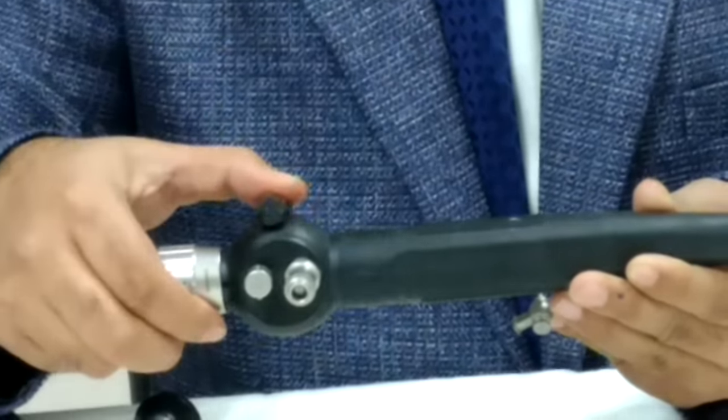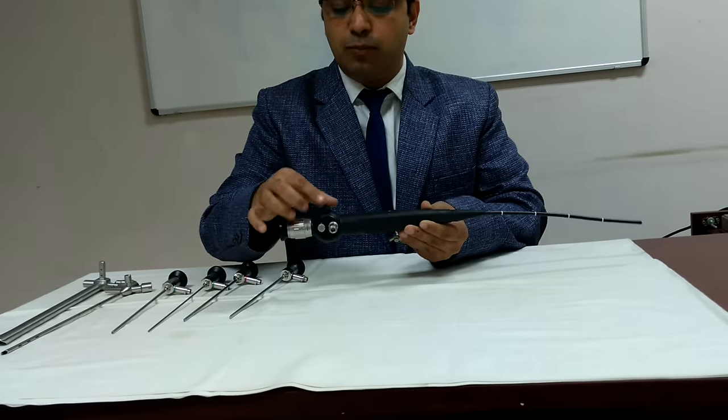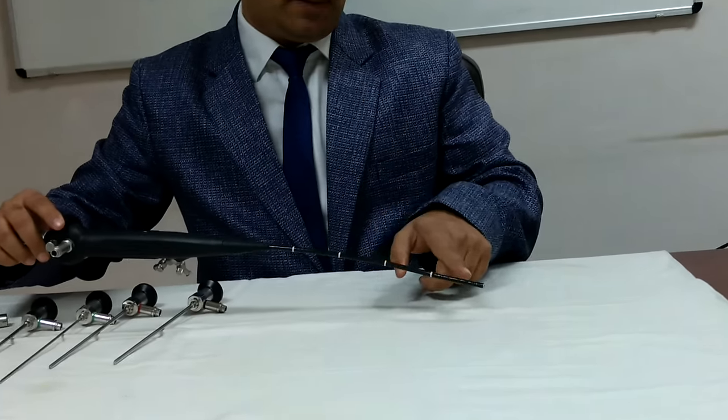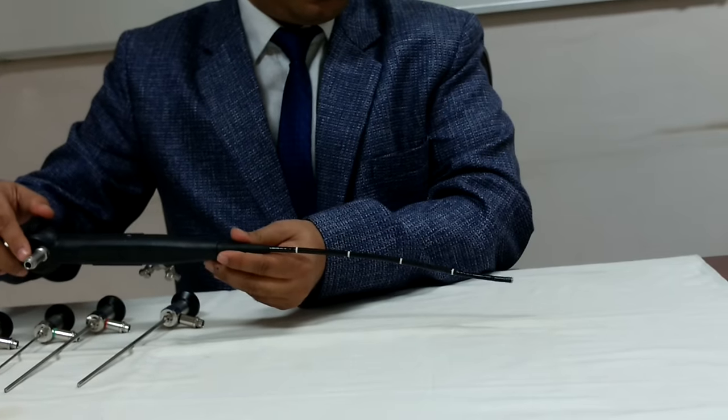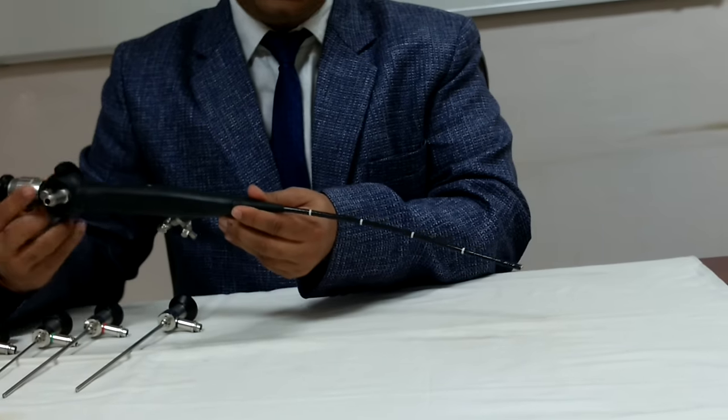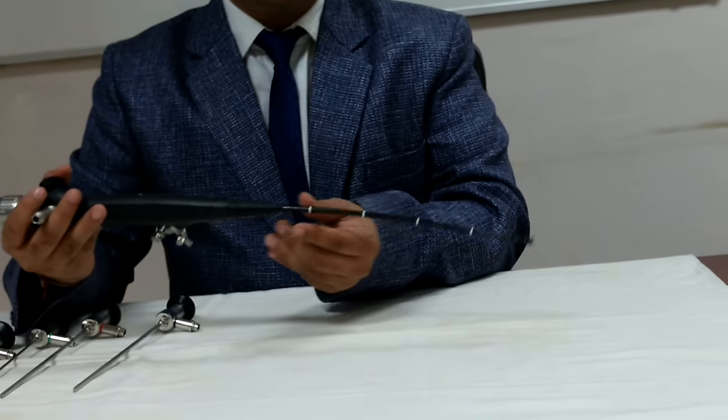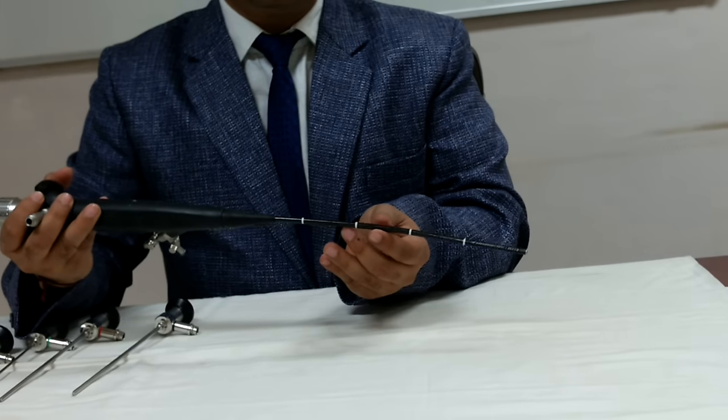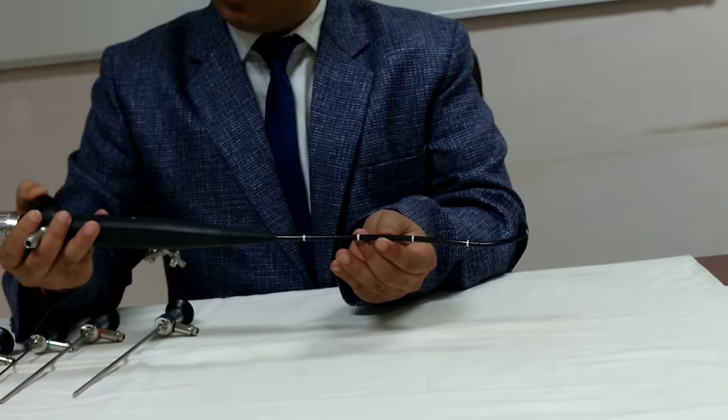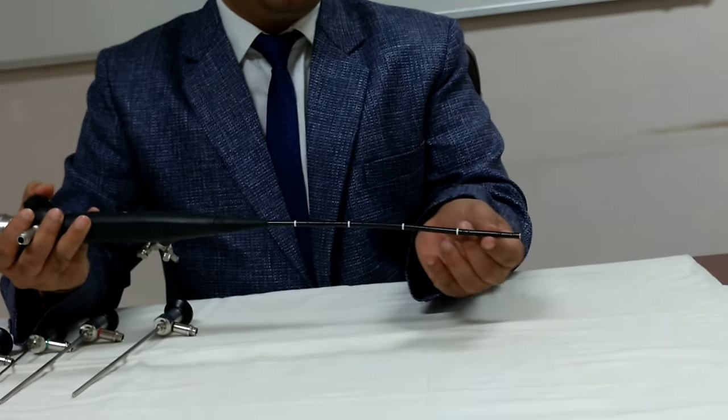You can see one knob here which I can move. Once I move the knob you can see what happens to the tip. So down, up. So once I introduce this scope in the nose or in the larynx, if I want to direct my scope I will use this knob to move the tip of the laryngoscope.